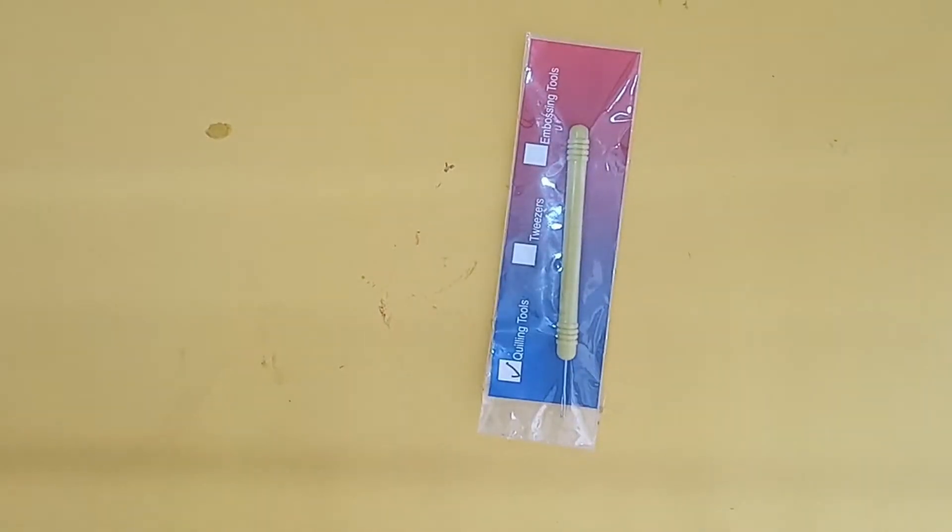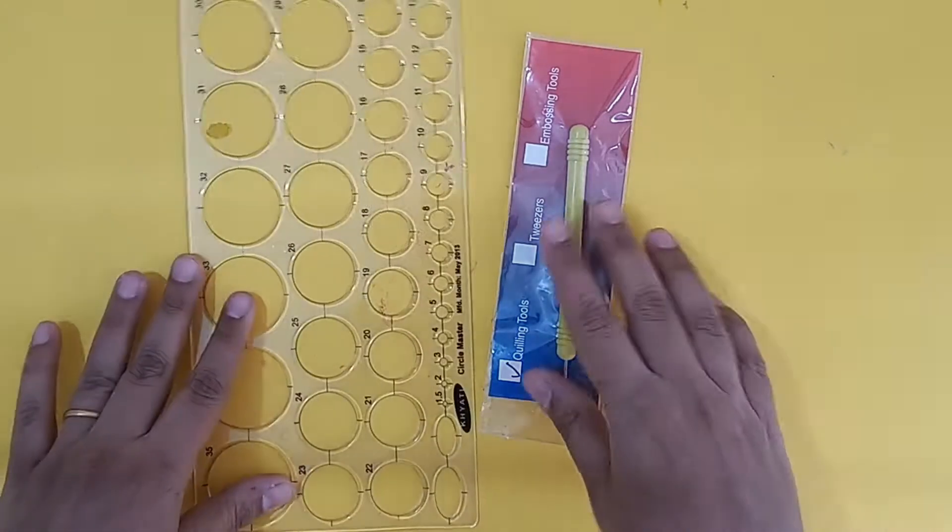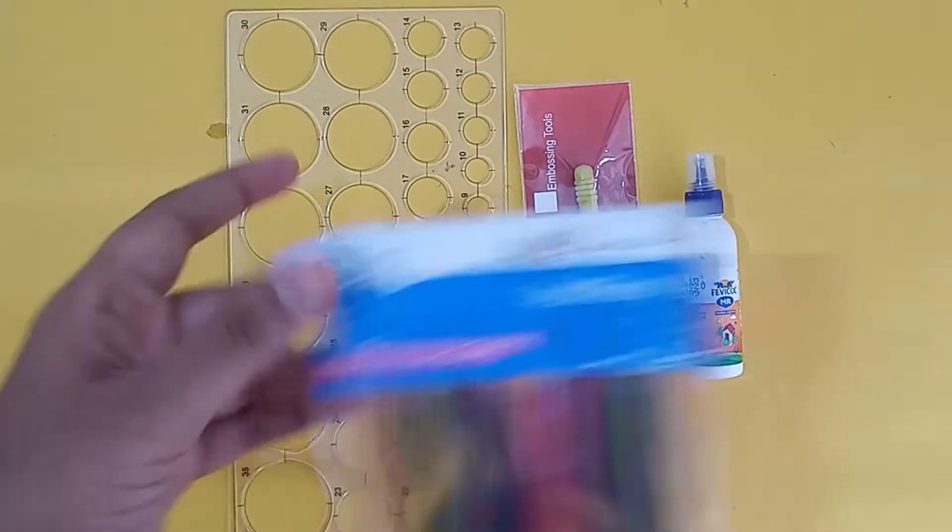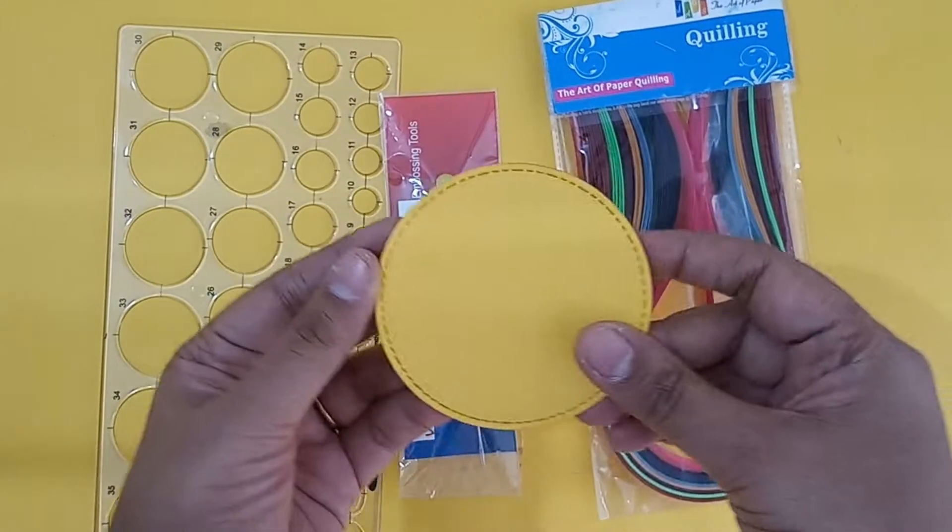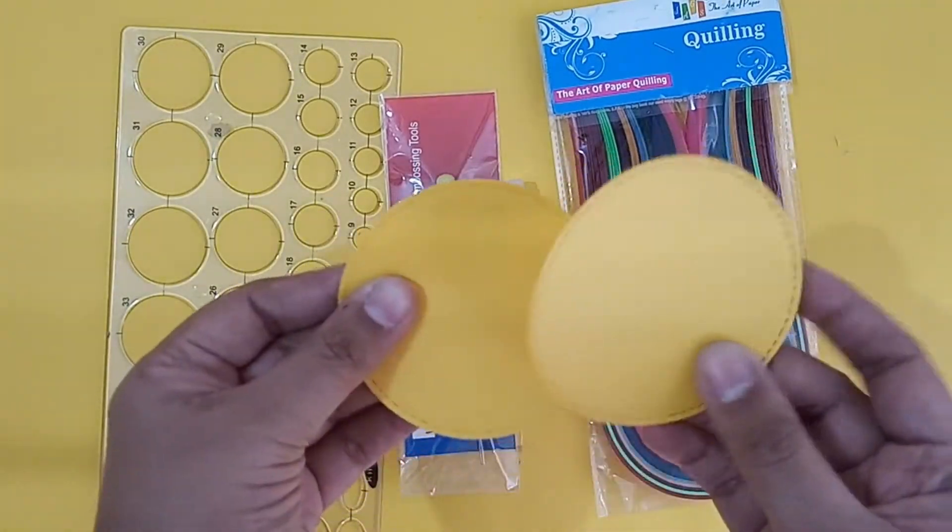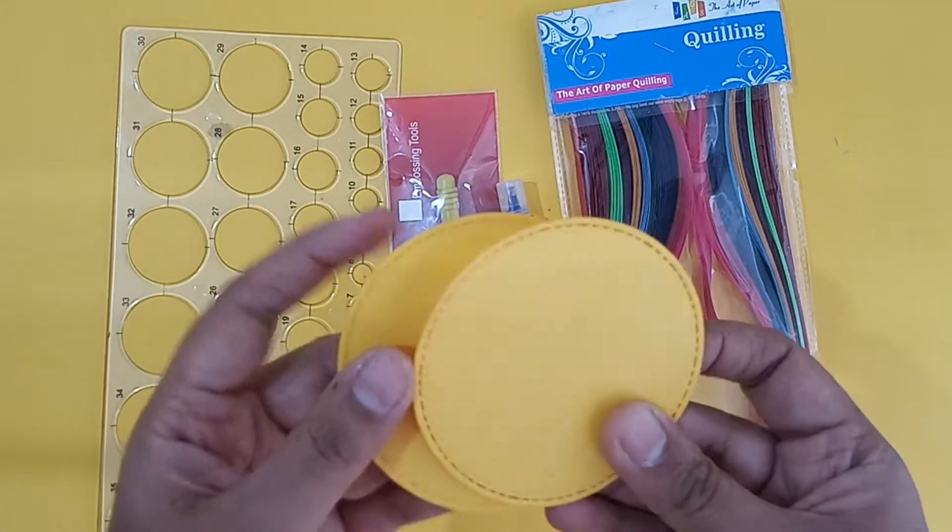For this we will need a quilling tool to rotate the paper strips and a circle stencil, few quilling strips and few card sheet circles or a cardboard circle.